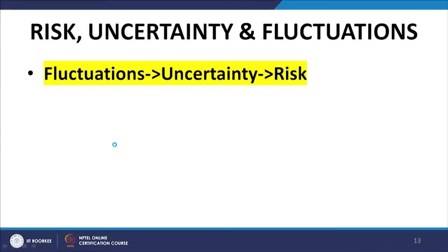Risk was treated as synonymous with uncertainty. It is only when the value of the investment on the date of maturity has the possibility of fluctuating between two or more values that uncertainty and therefore risk is present. The proper process is: fluctuations in the final value of an investment result in uncertainty as to which value the investment would take on its maturity, which results in the creation of risk in the mind of the investor.